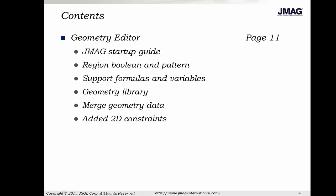Starting with geometry creation, version 15 adds a start-up guide that will appear when you first open JMAG Designer. In the geometry editor, you can now perform Boolean patterns, enter formulas and variables in the integer dialogs, add models to a geometry library, and merge multiple geometry files. In general, we worked to improve how JMAG generates and applies geometry constraints.